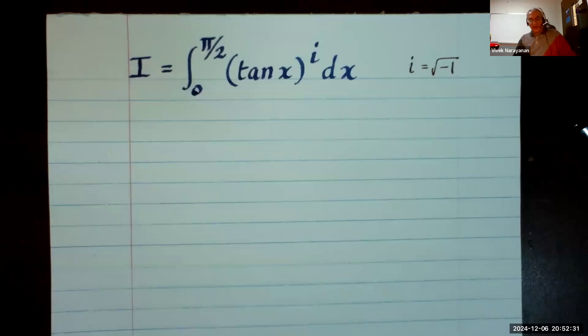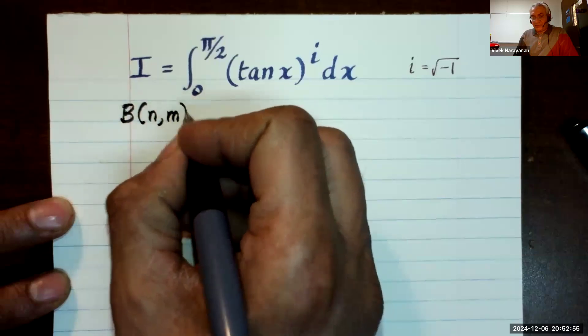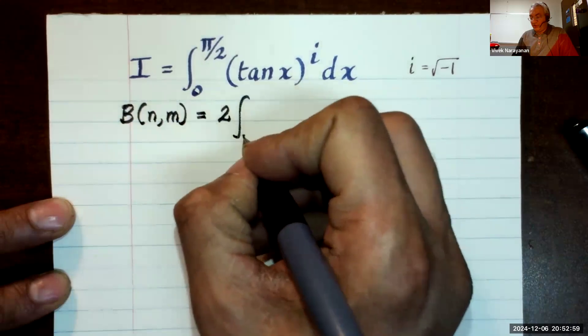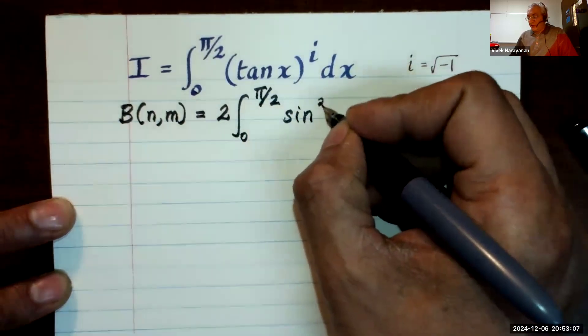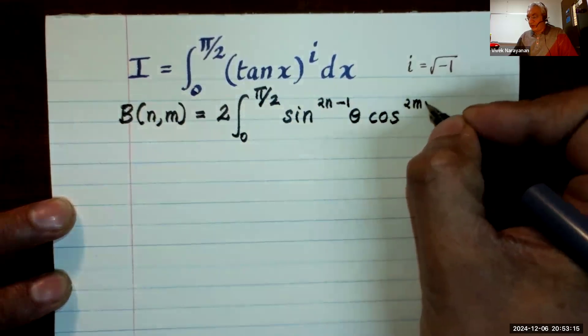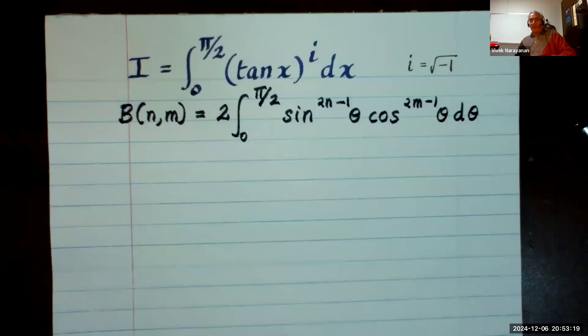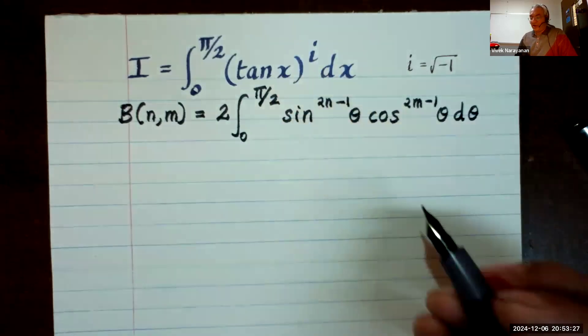So our starting point is one of the many tricks you learn with beta functions: representing the beta function in different ways. In some of my other videos, I have indicated this great way of looking at beta functions. So beta of n, m is 2 times the integral from 0 to π/2 of sine θ to the power 2n minus 1 times cosine θ to the power 2m minus 1 dθ. Now here, m and n can be anything, and so the obvious thing to do is write tangent as sine over cosine and figure out what that is.